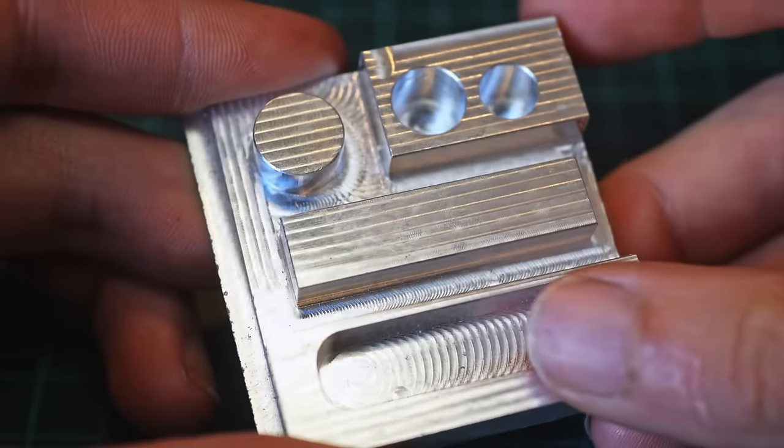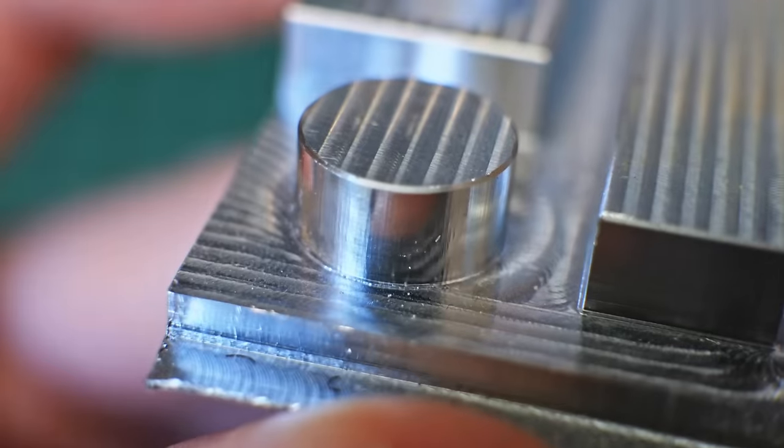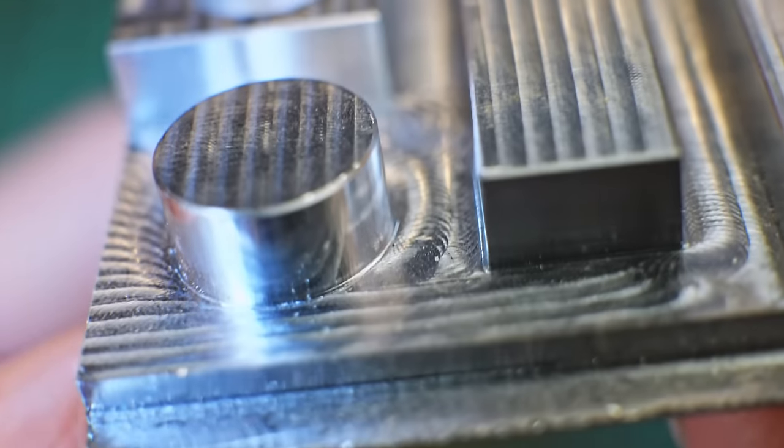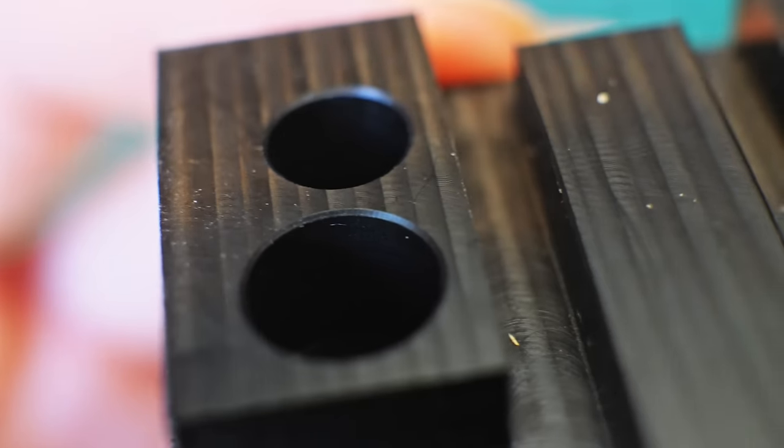So the surface finish on the aluminum part seems pretty decent. I think that the floor finish would have been improved greatly if I take a smaller depth of cut for the last pass with the adaptive clearing. There's definitely a lot of room for improvement and optimization of feeds and speeds.